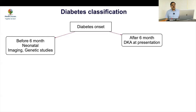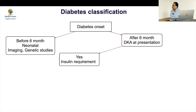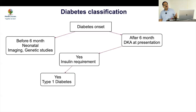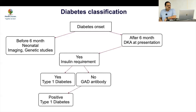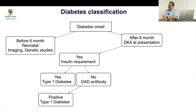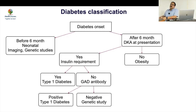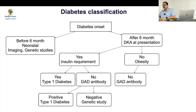If onset is after six months of age and there is a DKA presentation with the child needing insulin, this is type 1 — don't do any further workup. If insulin is not required — it may be honeymoon phase for one to two years — then do a GAD antibody. If the antibody is positive, this is type 1; if it is negative, go for MODY testing.